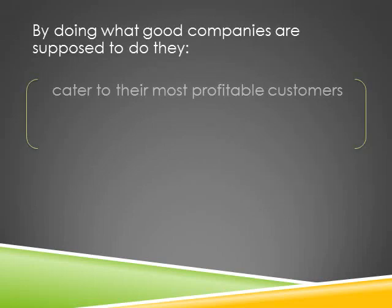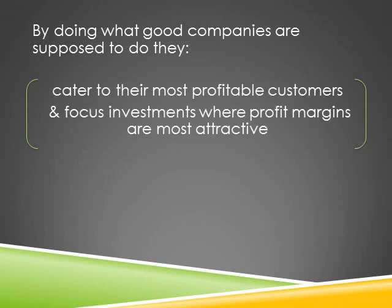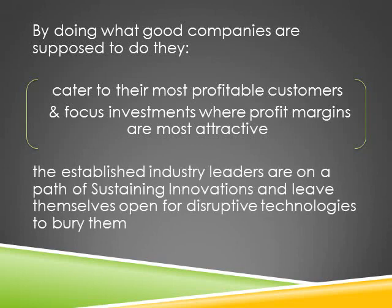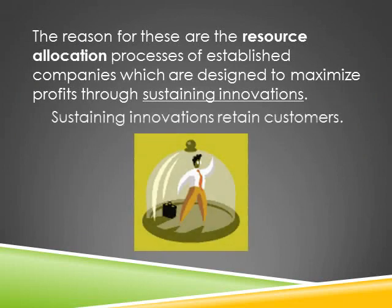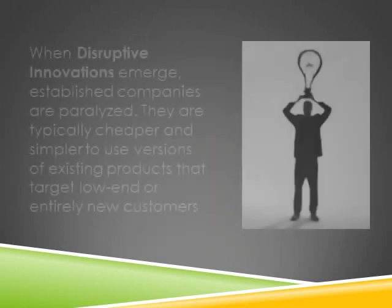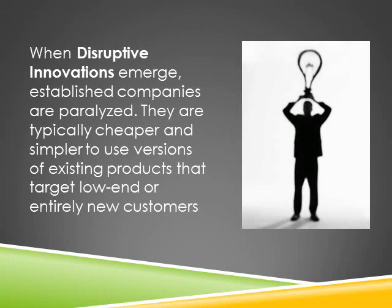By doing what good companies are supposed to do — catering to their most profitable customers and focusing investments where profit margins are most attractive — the established industry leaders are on a path of sustaining innovations and leave themselves open for disruptive technologies to bury them. The resource allocation process of established companies is designed to maximize profits through sustaining innovations, which retain customers. When disruptive innovations emerge, established companies are paralyzed.